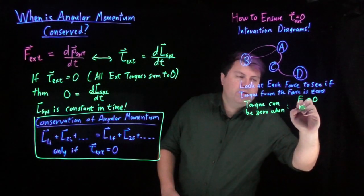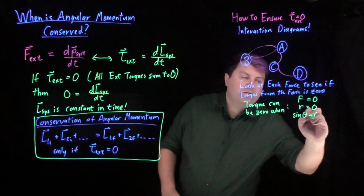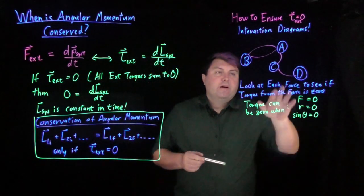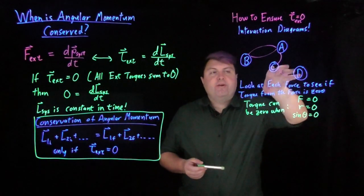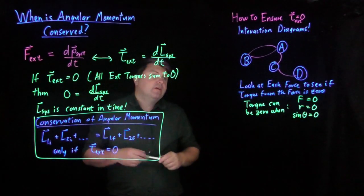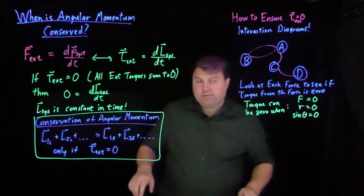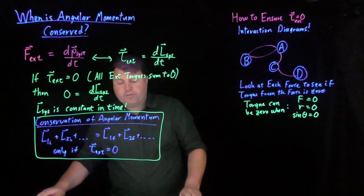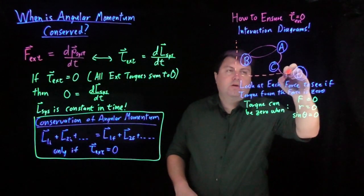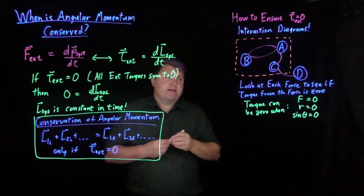The force is zero, the distance is zero, or the sine of the angle is zero. So if we have any of these where we have a non-zero force, but the radius is zero, or the angle gives us zero, then the torque will be zero. And so what we can do is we can then choose an interaction diagram such that that's the case.